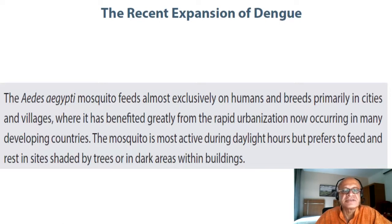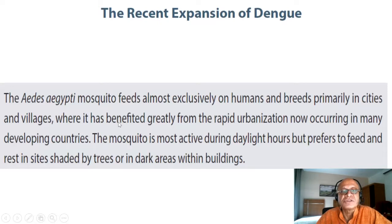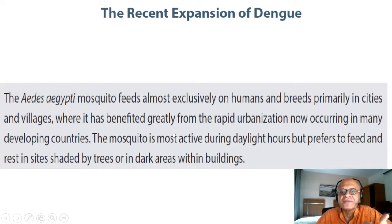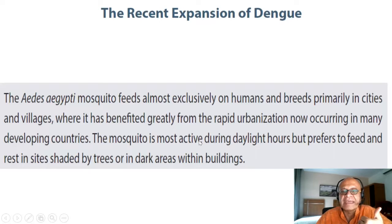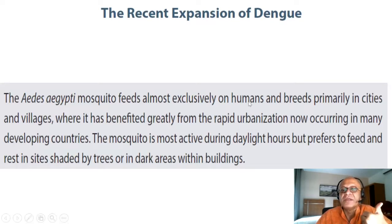The mosquito prefers to feed and rest in sites shaded by trees and in dark areas within buildings. You can imagine the difficulty of relating climate and weather factors to this mosquito population and abundance. Since it bites during daylight hours when people are up and about, bed nets are not going to be of great help.